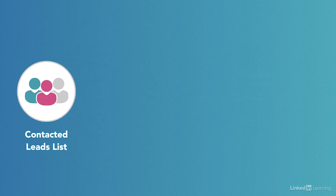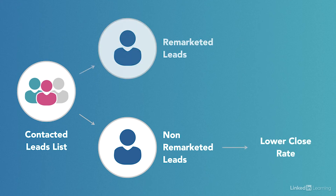Clients of mine sometimes test this by taking a list of leads that sales has contacted, splitting the list in half, and remarketing to half the list for a period of time — the length of which will be dependent on how long your sales cycle is. Then they monitor the difference in close rates between leads that they've remarketed to versus those that they didn't. We have nearly always seen a lift in close rates within the list of prospects that have been remarketed.